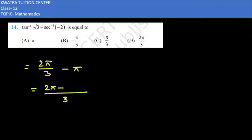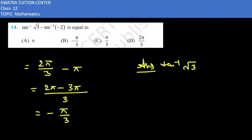When we take LCM as 3, 2 pi minus 3 pi which is minus pi by 3. So we can answer our question that our given equation tan inverse square root 3 minus sec inverse minus 2 is equal to minus pi by 3. Here is the solution of this question.